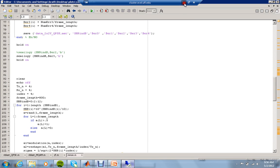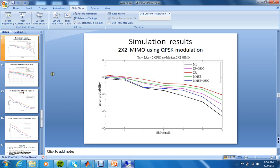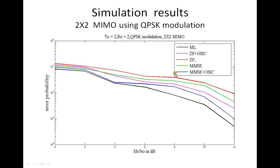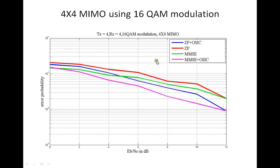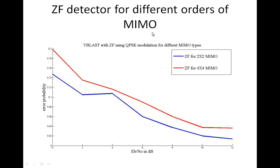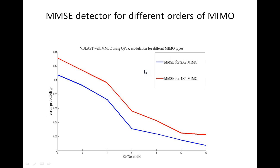Going back to the slides, these are the simulation results: maximum likelihood has the highest BER performance compared to zero-forcing and MMSE. The same holds for 16QAM modulation. For different orders of MIMO, as the order increases, bit error rate performance becomes better and better.